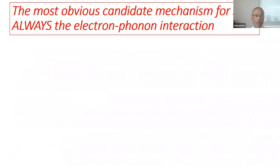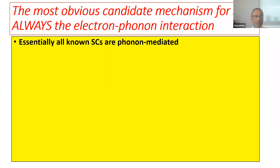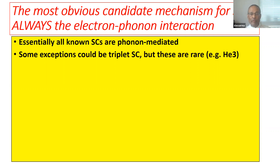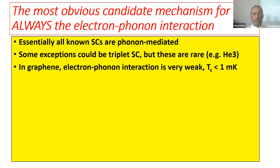The most obvious candidate mechanism for superconductivity is always the electron-phonon interaction. The reason is simple: essentially all known superconductors are phonon mediated. There are like 50,000 to 100,000 superconductors, and it's a safe assumption that 99.9% are known to be phonon mediated. There are some exceptions — heavy fermion materials, iron pnictides — but these are rare. The famous example is superfluid helium-3, but that's not electrons. Now, in graphene, the electron-phonon interaction is very weak, and you can calculate what kind of TC it will give — way below one millikelvin. We did that some years ago. This is the mystery the MIT experiment, Pablo's famous experiment, brought in.